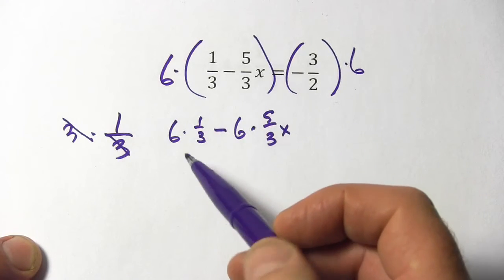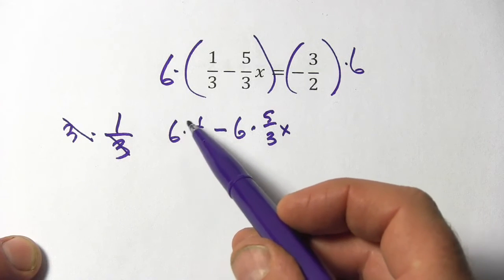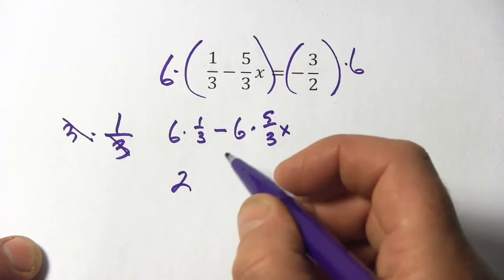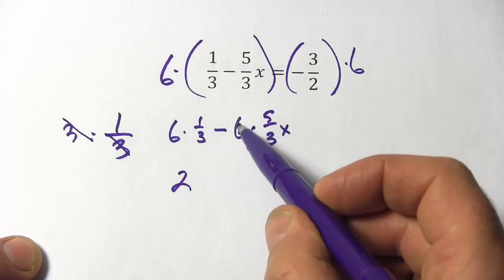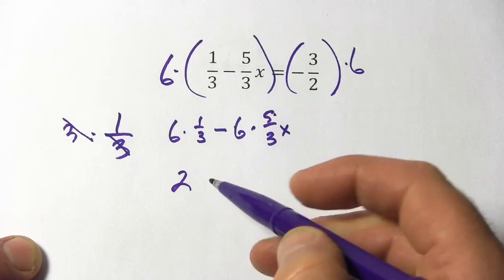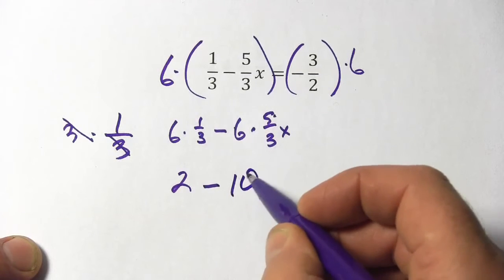Let's just work on these two. 6 times 1/3, well, 6 times 1 is 6/3. 6 divided by 3 is 2. So this is just 2. And I'll do the same thing. 6 times 5, that's 30. 30 divided by 3 is 10. So this is minus 10x.